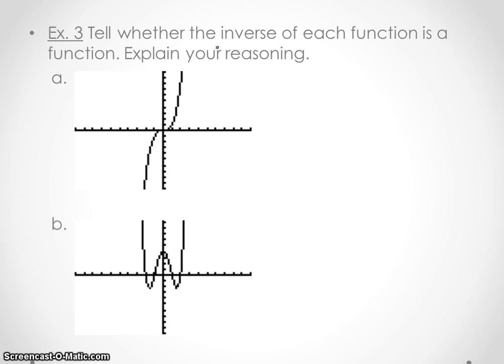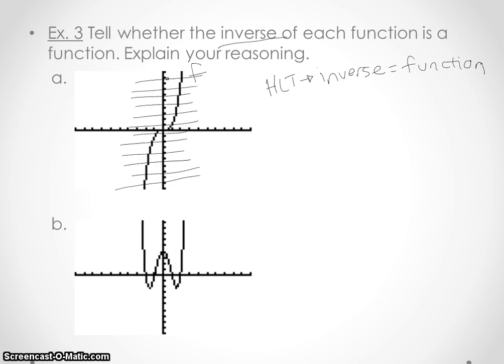Example 3 says tell whether the inverse of each function is a function. So they're giving you the original, so essentially if I'm talking about the inverse that's going to be the horizontal line test it needs to pass for the inverse to be a function. So does this guy pass the horizontal line test? If I draw a bunch of horizontal lines in is he going to pass? Well so far it's just hitting all in one spot so I don't have any repeaters. So yes this guy passes. He is going to be a function because it passes the horizontal line test.